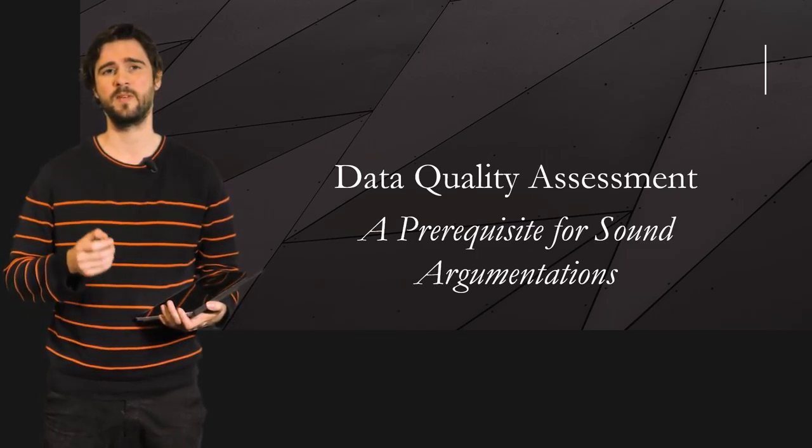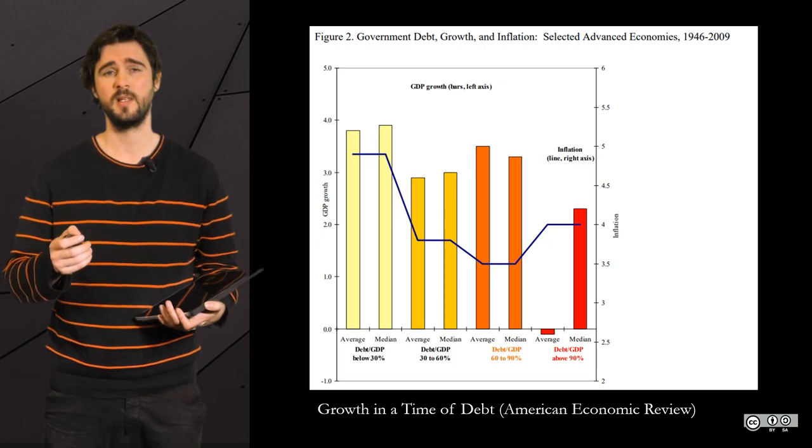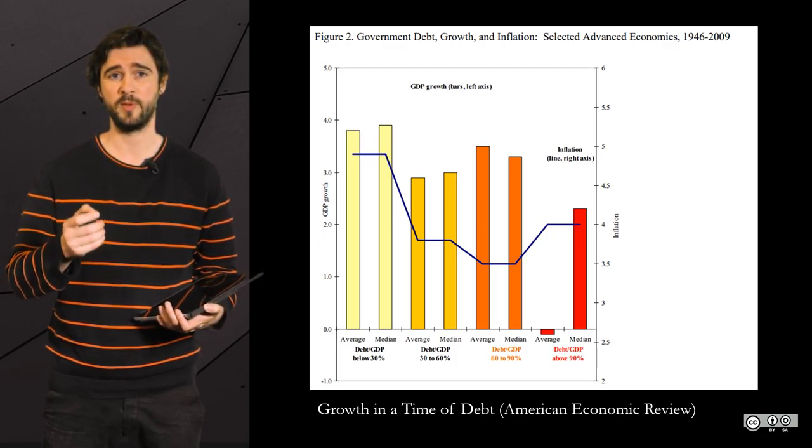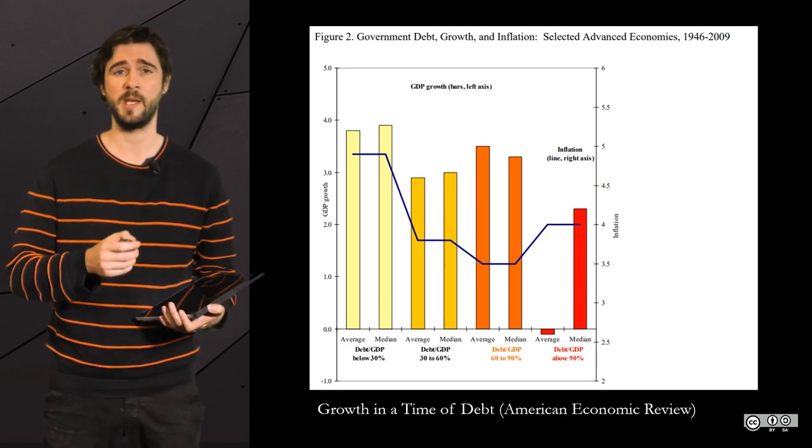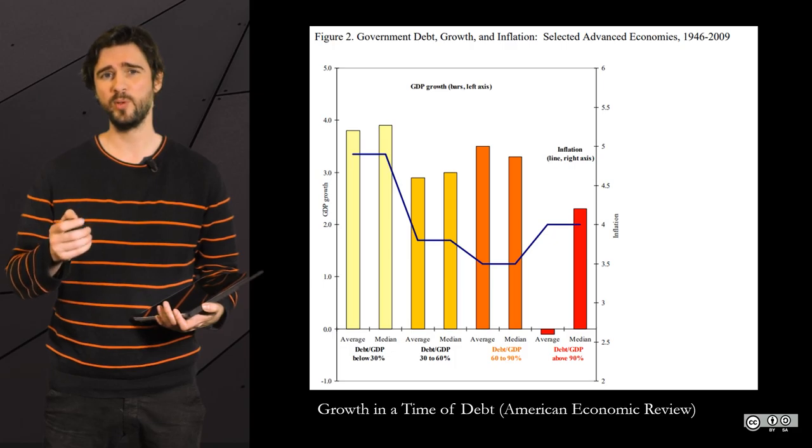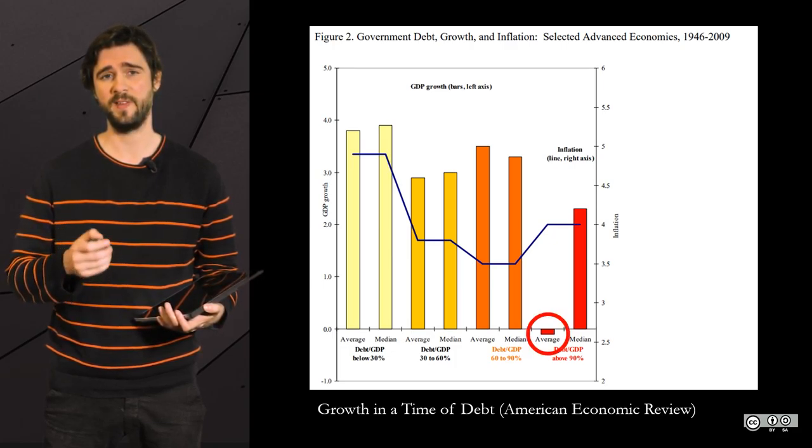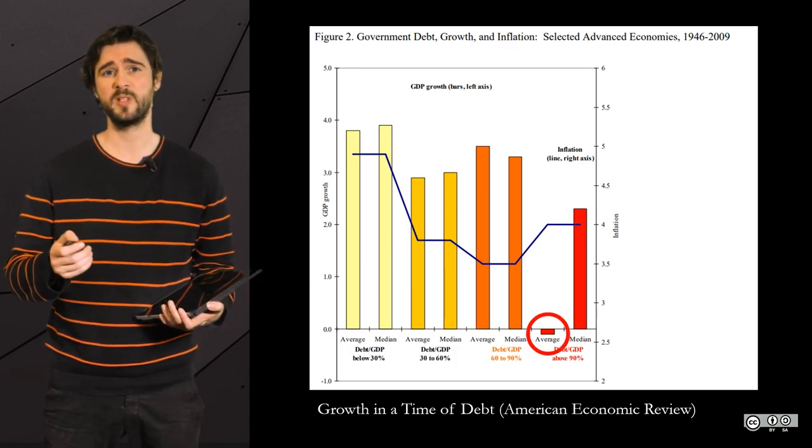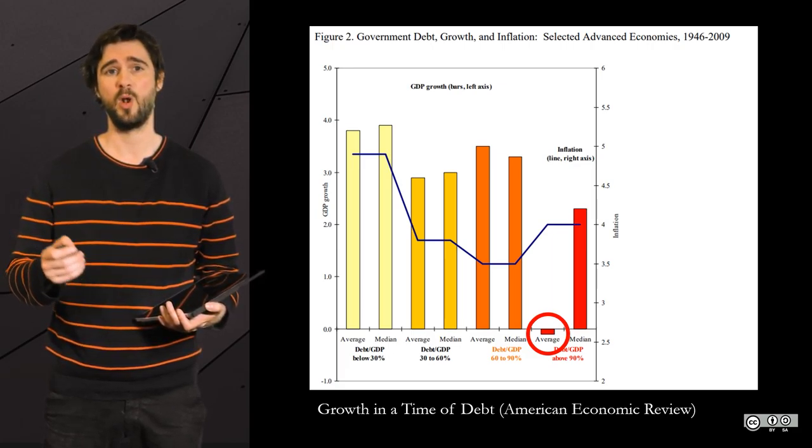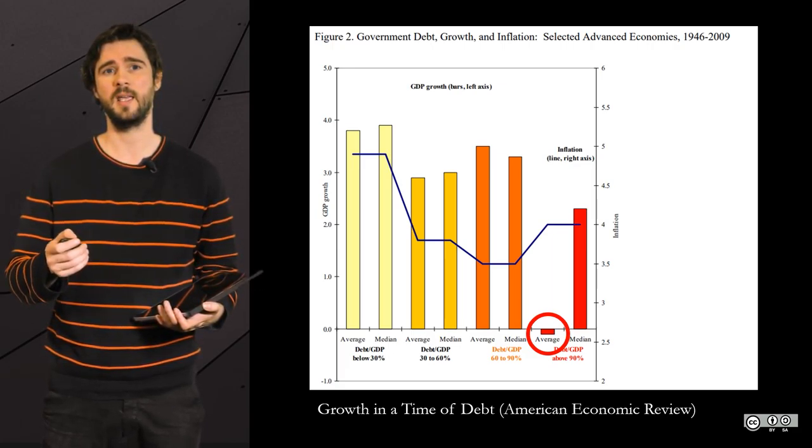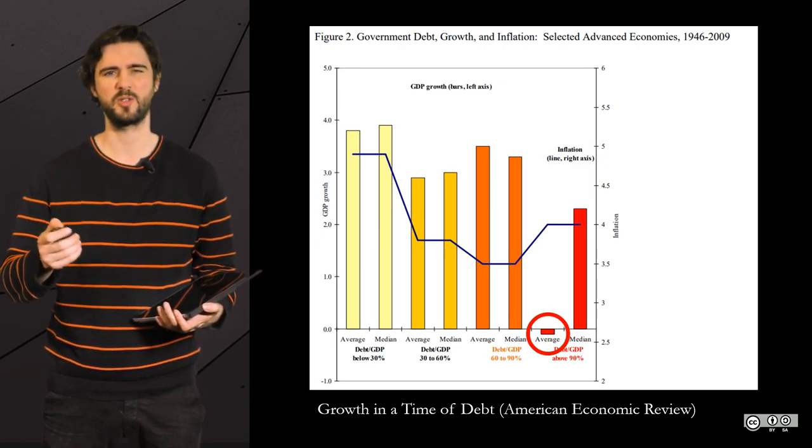The Reinhardt and Rogoff controversy. For the record, they published a famous research article in the American Economic Review that linked public debt and annual growth. It is called Growth in the Time of Debt. They pulled together data on growth and debt for advanced economies and computed the average growth for three categories of debt: low, medium, high and very high.